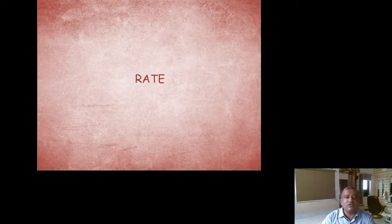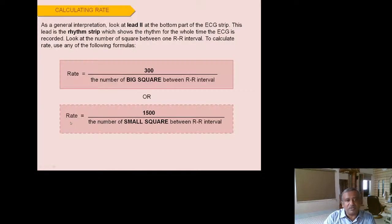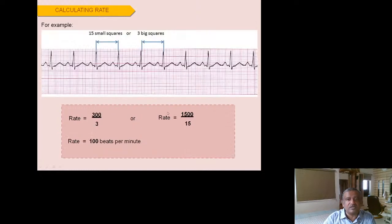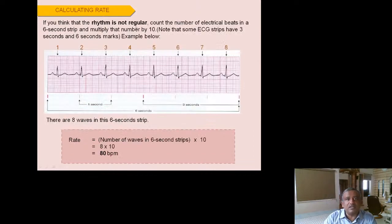For heart rate calculation, use the formula: Rate = 1500 divided by the number of small squares between two consecutive RR intervals. For example, if there are 15 small squares between two R waves, 1500 ÷ 15 = 100 beats per minute. You can also apply the large square method: 300 divided by the number of large squares, giving the same result. The 1500 formula using small squares is more reliable.